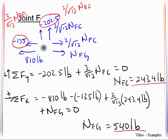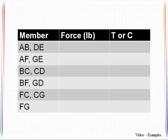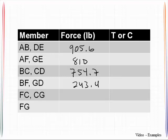So we have now found enough of the bar forces to be able to fill out a summary table. So let's come back here. We will get it. This is 905.6 pounds, 810 pounds, 754.7 pounds, 243.4, 243.4, and 540.